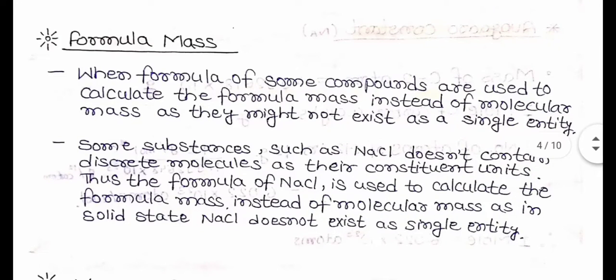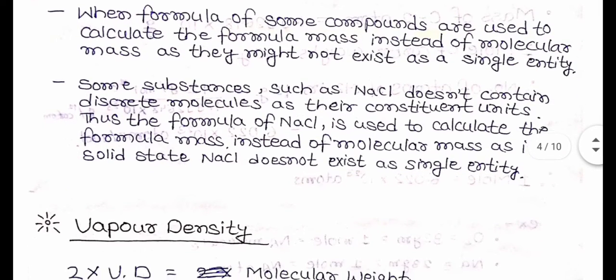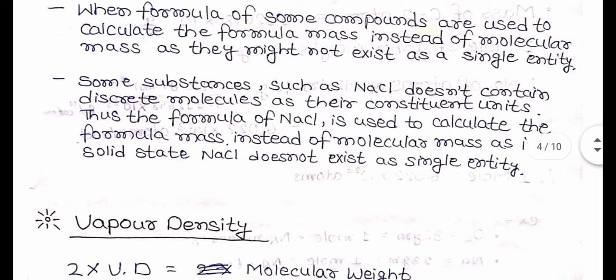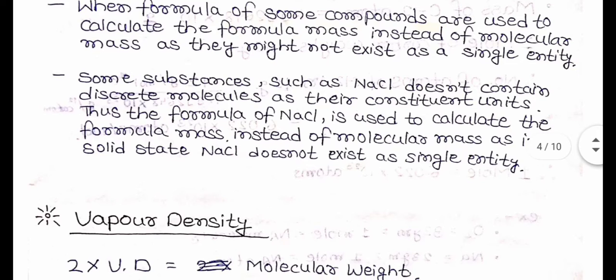Next topic: Formula Mass. When formulas of some compounds are used to calculate the formula mass instead of molecular mass, it is because they might not exist as a single entity. Some substances such as NaCl do not contain discrete molecules as their constituent units. Thus, the formula of NaCl is used to calculate the formula mass instead of molecular mass, as in solid state NaCl does not exist as a single entity.